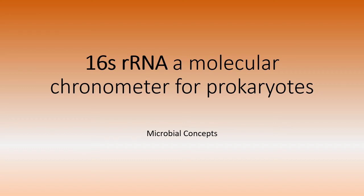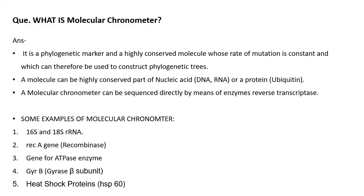Hello and welcome back. Today we are going to discuss another topic from taxonomy — 16s rRNA as a molecular chronometer for prokaryotes. First, what is a molecular chronometer? It is a phylogenetic marker — a highly conserved molecule whose rate of mutation is constant, and thus we can use it to construct phylogenetic trees.